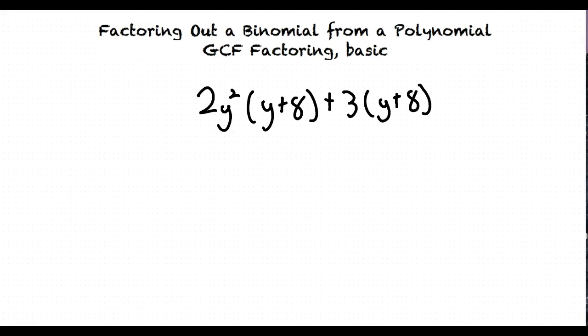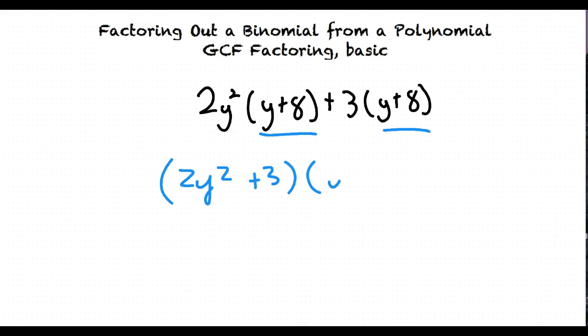Sure. Using the distributive property, we can see that both parts of the polynomial share the binomial (y plus 8). Once we factor out the (y plus 8), we are left with (2y squared plus 3), and then we multiply that by (y plus 8) since that's what we factored out.